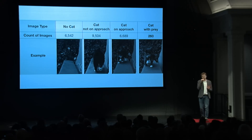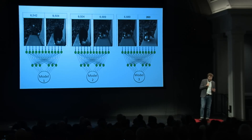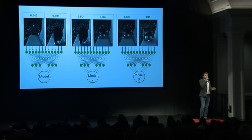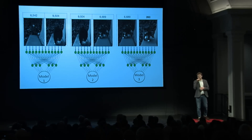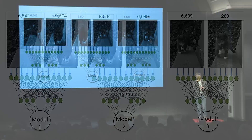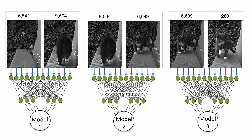I fed all these images to an online machine learning service called SageMaker and created three models that I strung together to achieve the detection I needed. The first model, stage one, just runs all day long and asks: is there a cat?